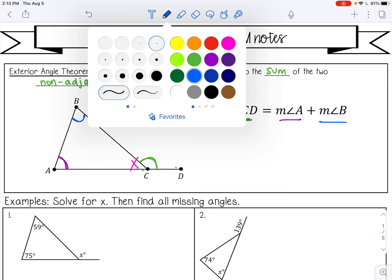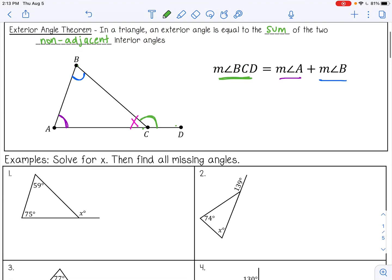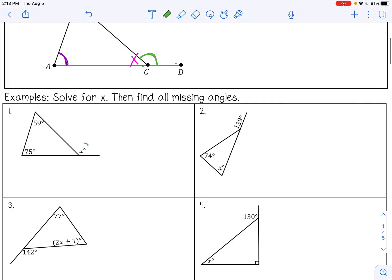So let's try some examples. Number one, we have a missing exterior angle here, so that is equal to the sum of these two interior angles that are not touching, they're not adjacent to, so 59 plus 75, which would be 134 degrees. So that means this angle measure here is 134 degrees.